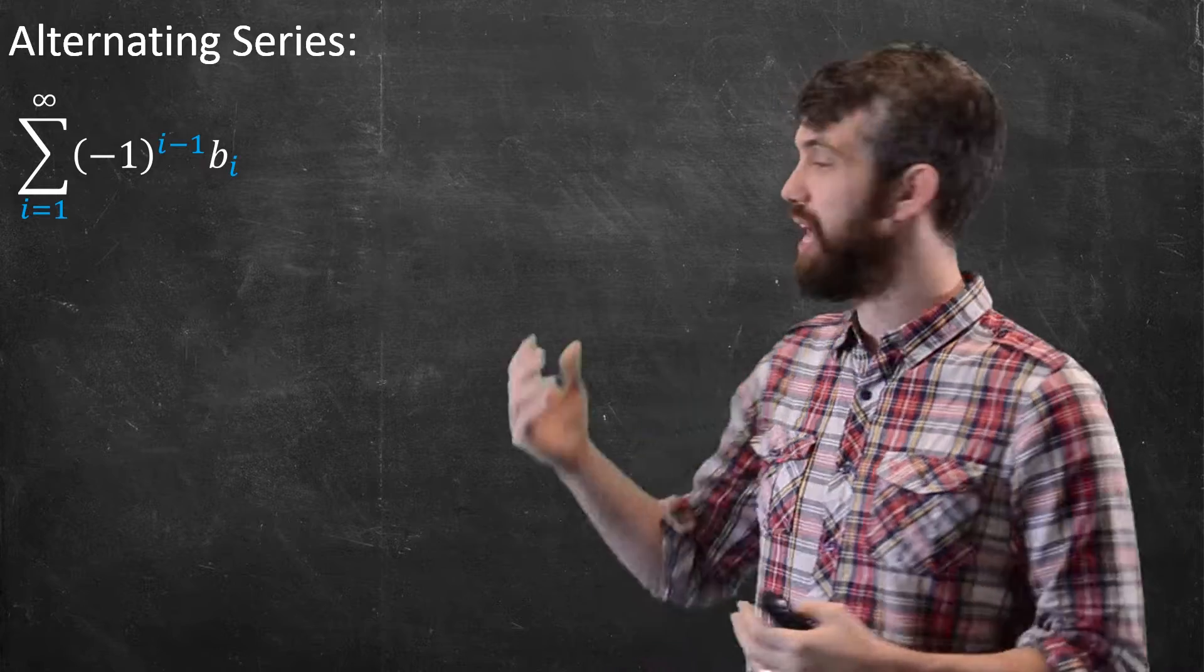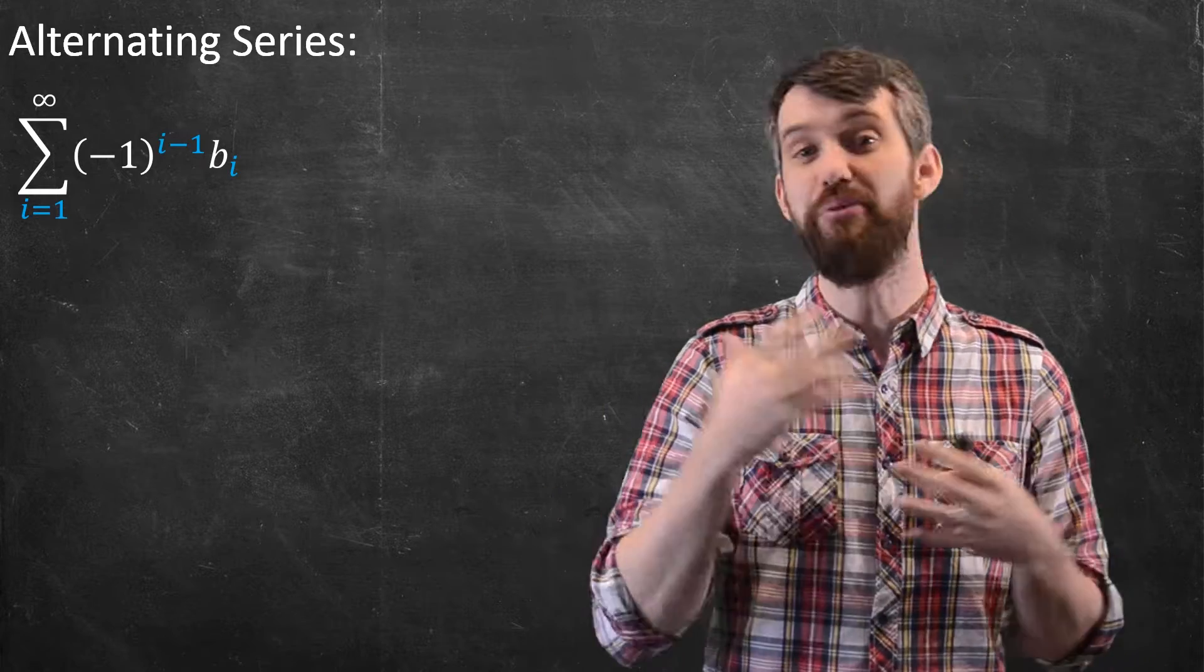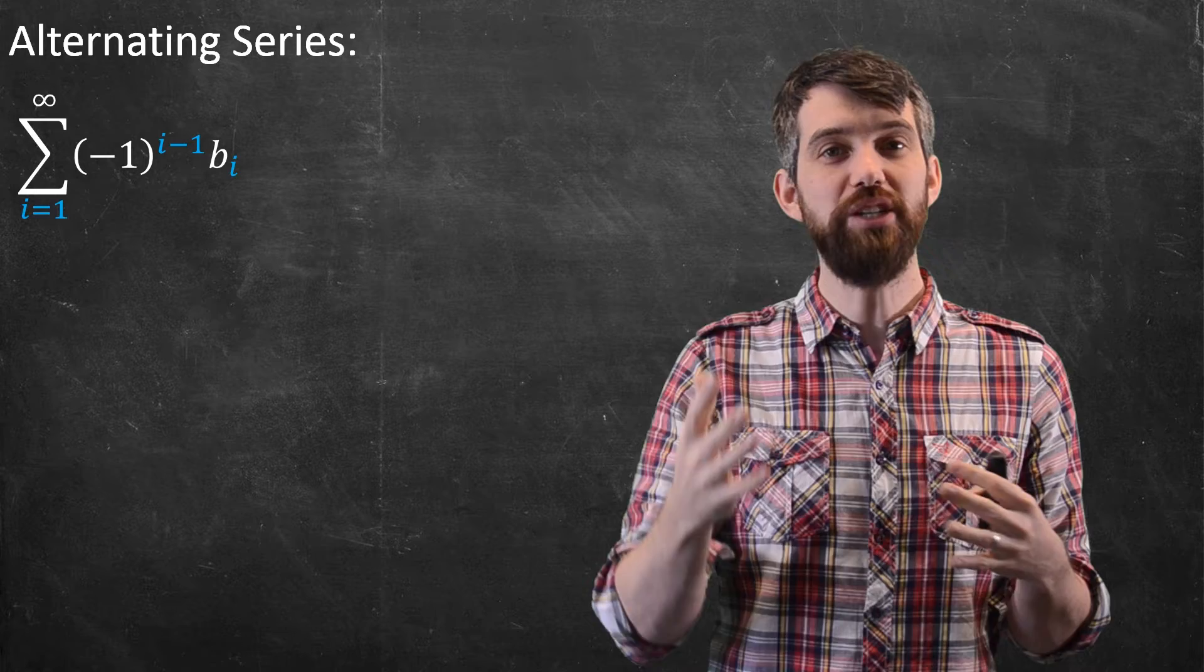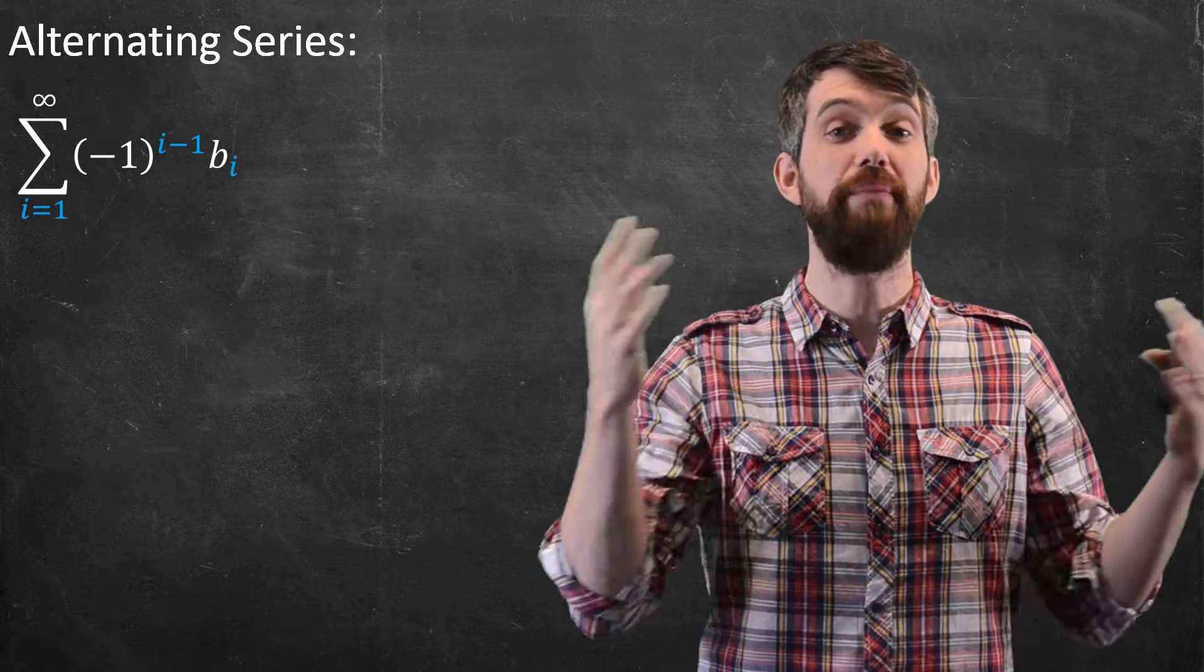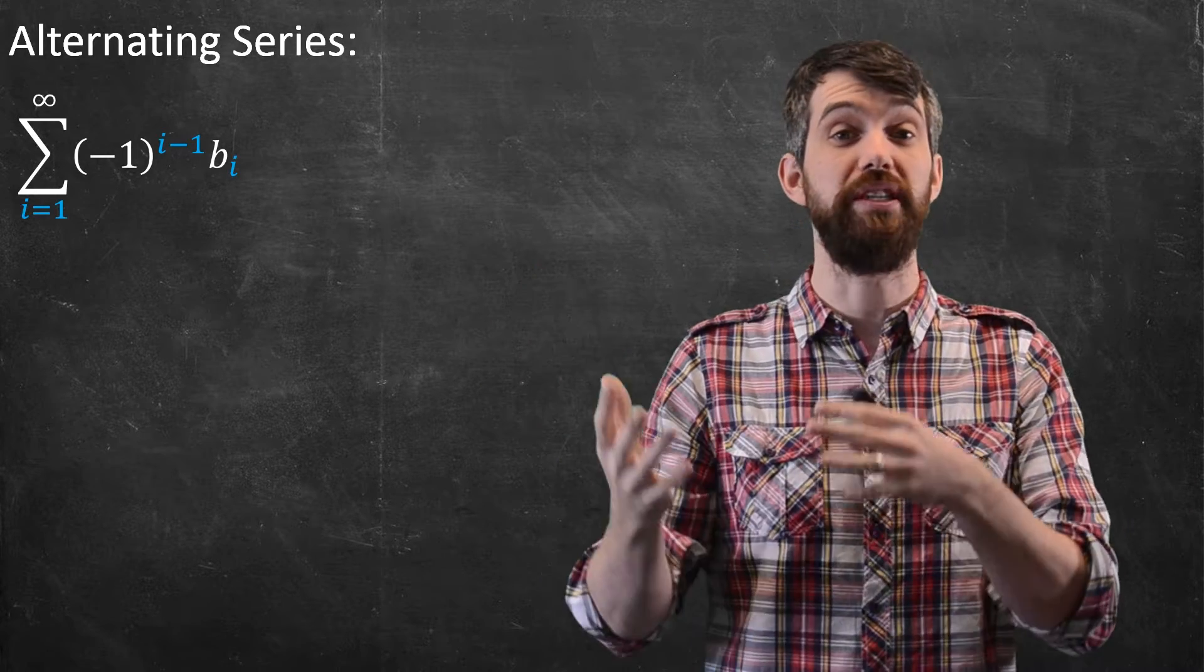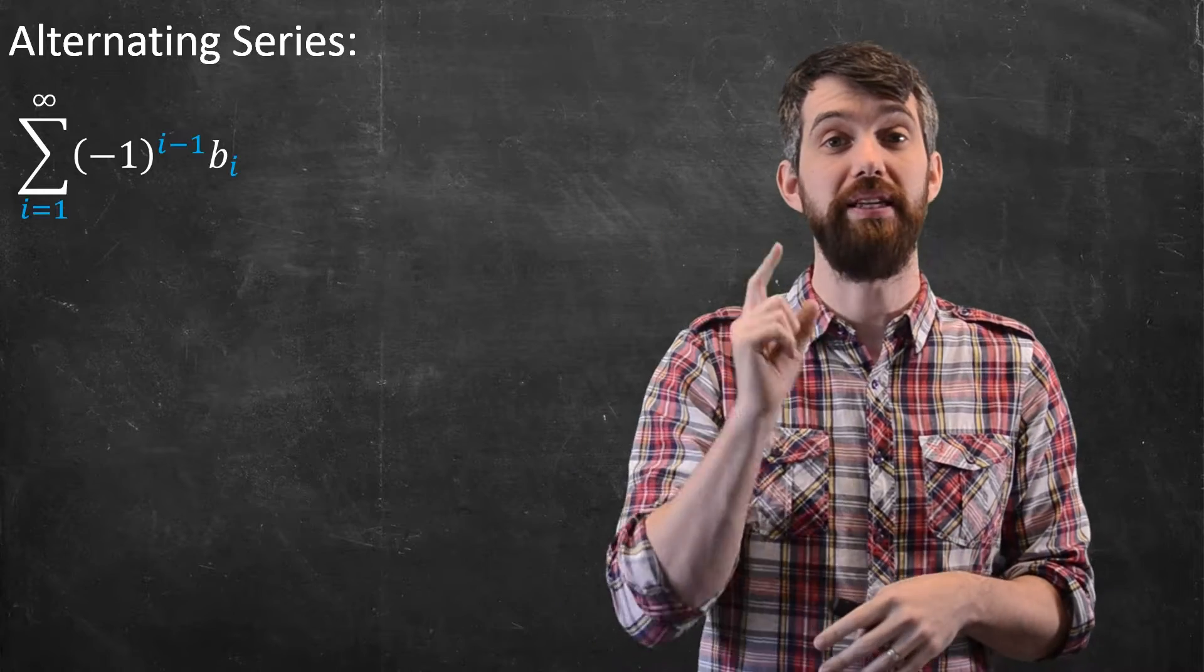Suppose I have an alternating series like this one. This is the sum from i equals 1 to infinity of minus 1 to the i minus 1 times some other positive decreasing sequence with limit 0, b sub i.